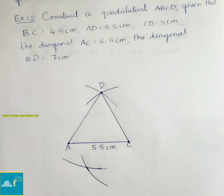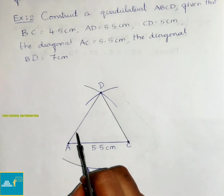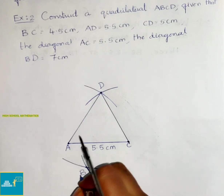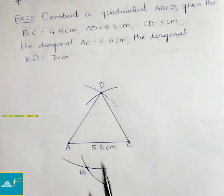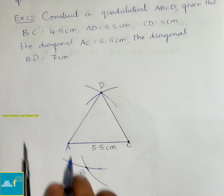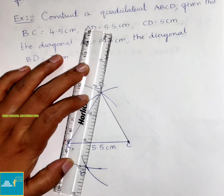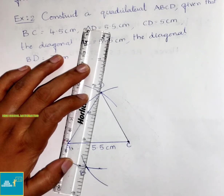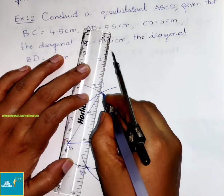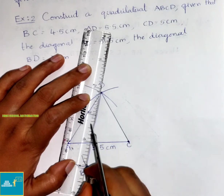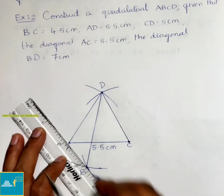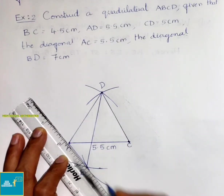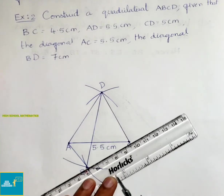Now these both arcs meet at point B. Let us join B to D and B to C. We also have to join AB. First join the BD diagonal, then join AB and BC.